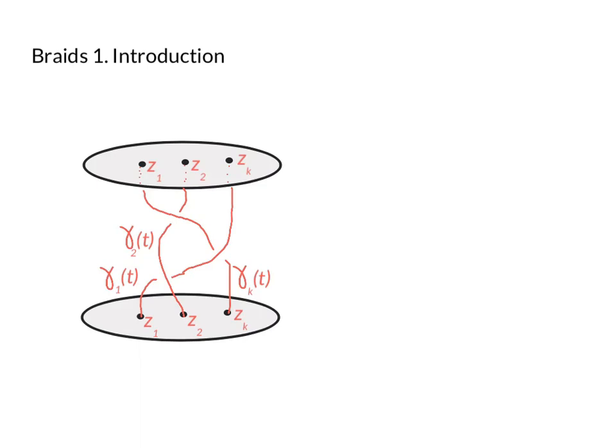I'm going to call the different strands gamma_1, gamma_2, all the way up to gamma_K. I want to think of the strands as paths in three-dimensional space depending on a parameter t, a time parameter. At the bottom we have t equals zero, at the top we have t equals one, and in between I want these paths always to be moving upwards.